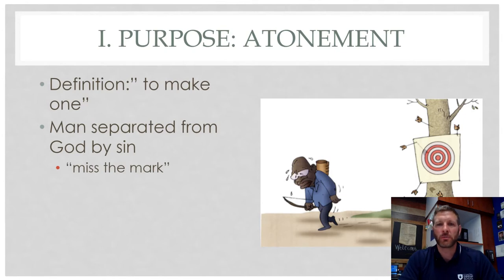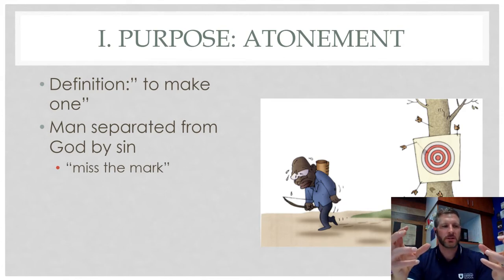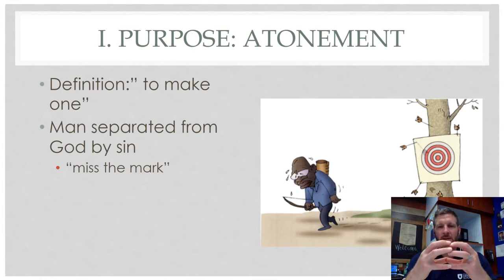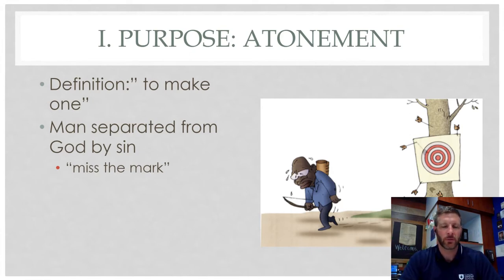To make atonement for their sins. That word atonement basically means to make one. I look at the word and it says 'at-one-ment' — it wants to bring two parts of something that are broken back together and make them one. What was ripped apart is being brought back together whenever we are seeking atonement.